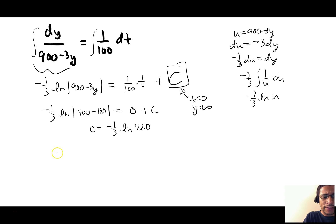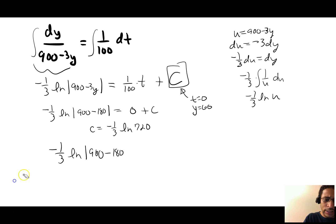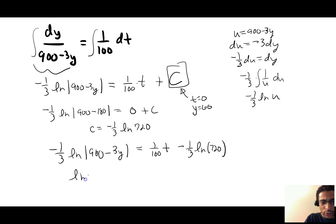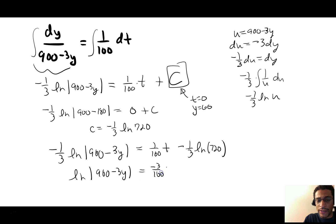Plugging C back in and multiplying everything by −3: ln(900 − 3Y) = −(3/100)t + ln(720). We multiplied by −3, so the right-hand side becomes −3/100 · t plus ln(720).